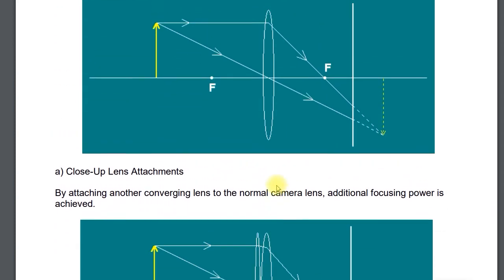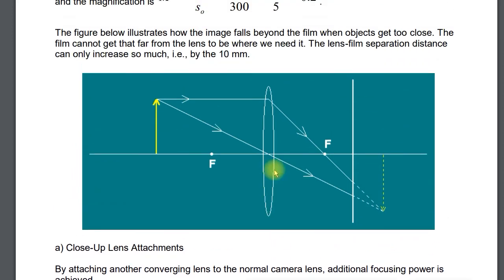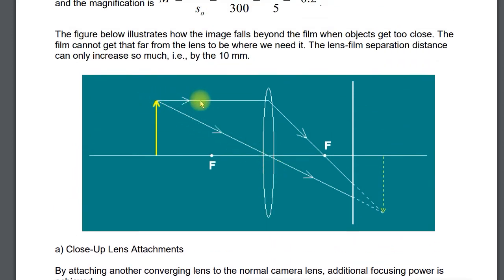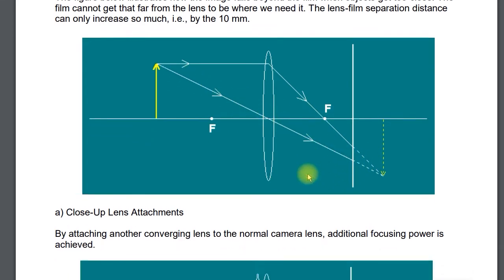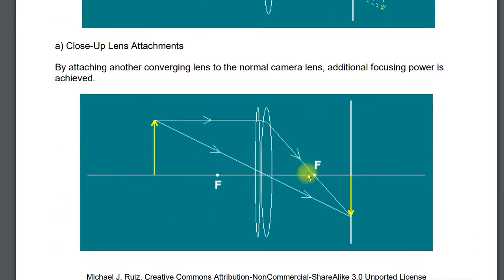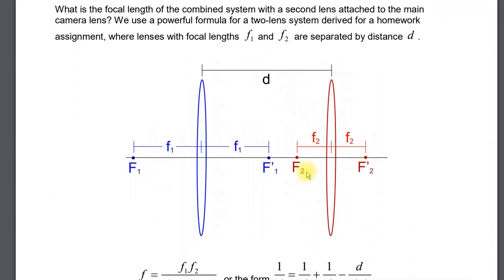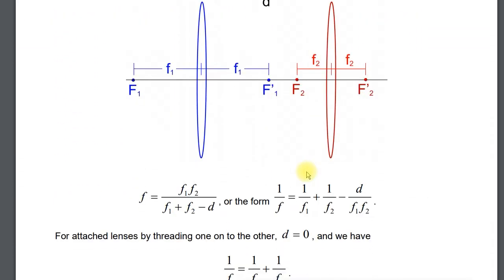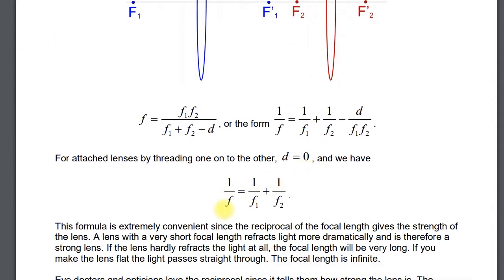Know ray tracing: a parallel ray goes through F, one goes through the center undeviated. You should know that if you have lenses close to each other, these are diopters and they add.